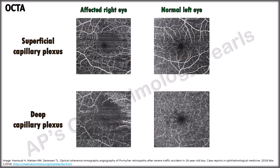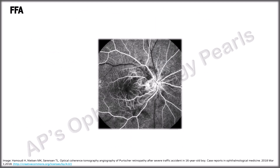OCT angiography shows evidence of ischemia at both the superficial and deep capillary plexuses. Fundus fluorescein angiography shows varying features of blocked fluorescence, vessel blockage, and optic nerve head leakage depending on the extent of the underlying pathology. Visual field testing shows central, paracentral, or arcuate scotomas, and multifocal ERG shows evidence of inner and outer retinal dysfunction.